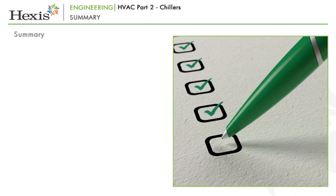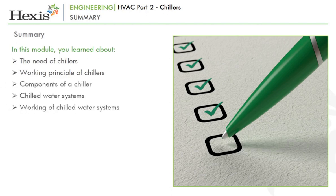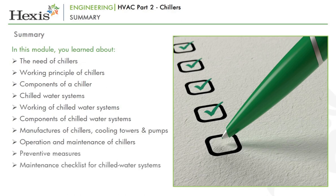That brings us to the end of this module on HVAC. In this module we looked at: the need for chillers; the working principle of chillers; components of a chiller; chilled water systems; the working of chilled water systems; components of chilled water systems; manufacturers of chillers, cooling towers and pumps; operation and maintenance of chillers; preventive measures; the maintenance checklist for chilled water systems; and the impact on business.